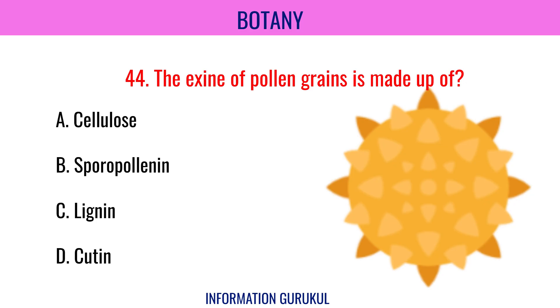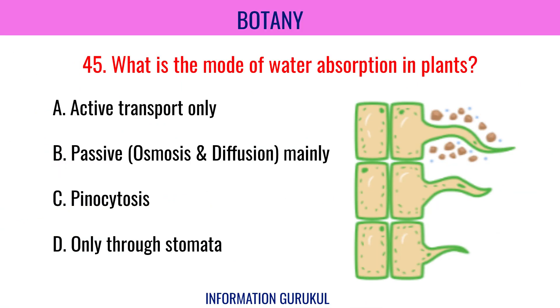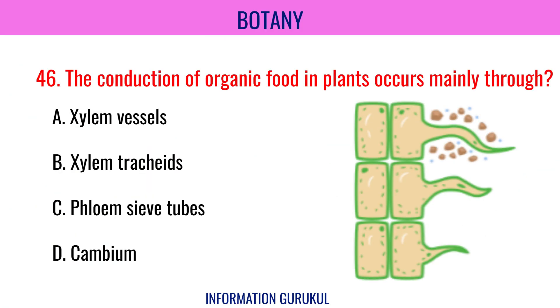The exine of pollen grains is made up of sporopollenin. What is the mode of water absorption in plants? Passive, mainly. The conduction of organic food in plants occurs mainly through phloem sieve tubes.